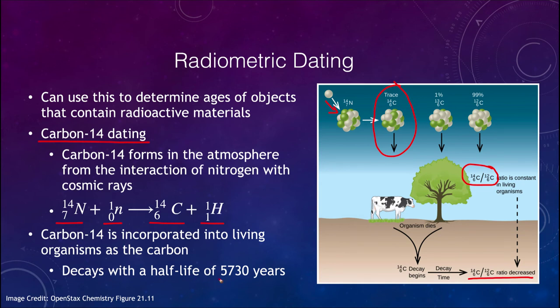Carbon-14 decays with a half-life of 5,730 years. This is very convenient because many things we want to date are thousands or tens of thousands of years old. However, it won't work for things that are millions of years old because we'd go through too many half-lives and the remaining amount of parent would be too small to measure. That's why carbon dating is typically used for things like paper or wood from trees.